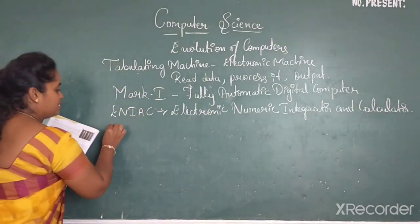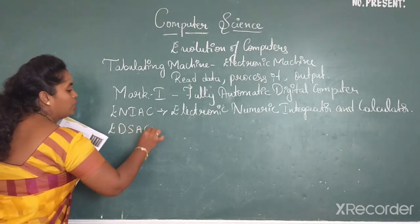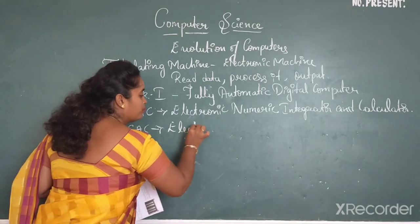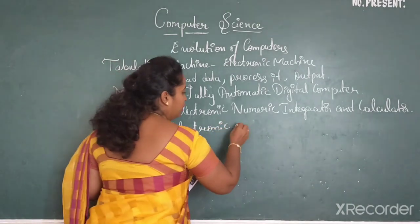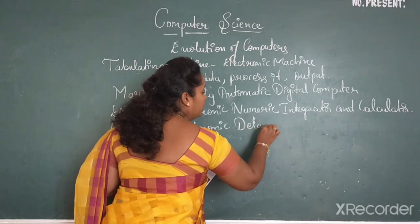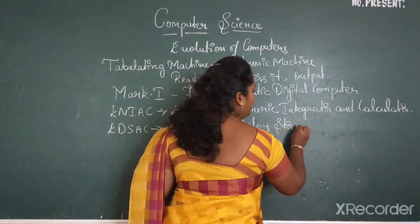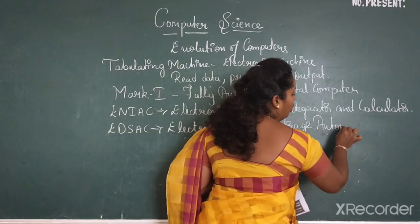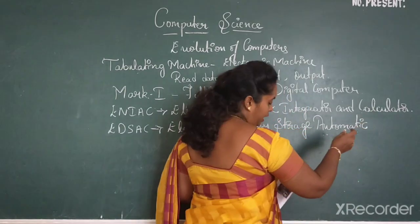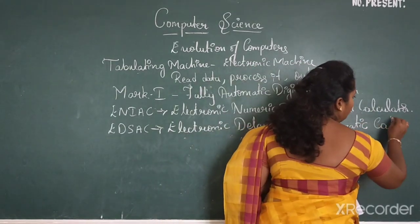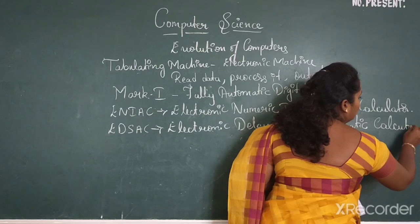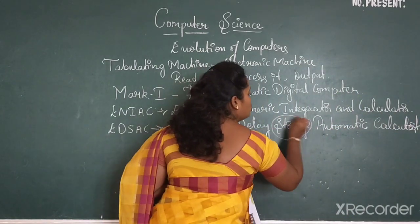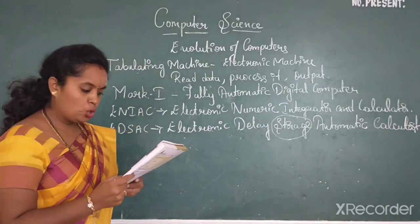Then comes your EDSAC. What is this EDSAC? EDSAC is electronic delay storage automatic calculator. So by the name itself children, you can know that it is used for storing purpose.